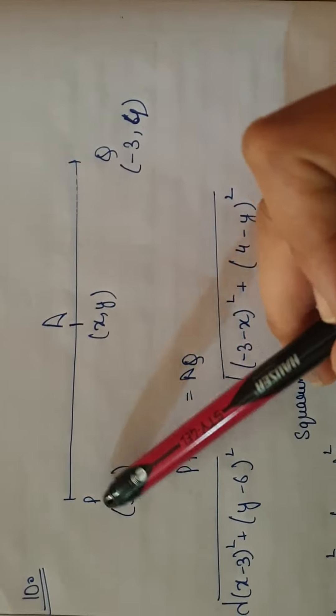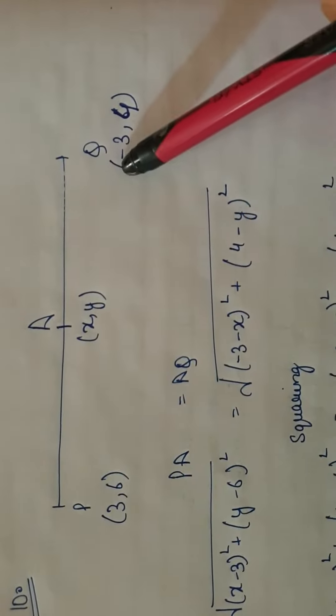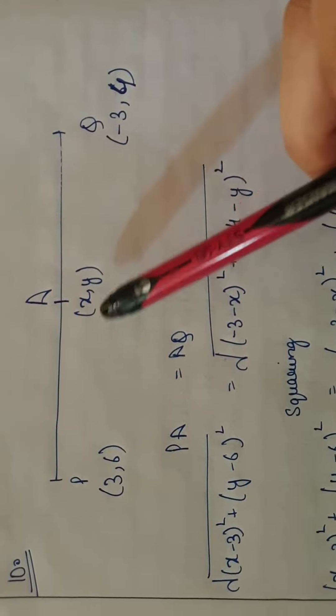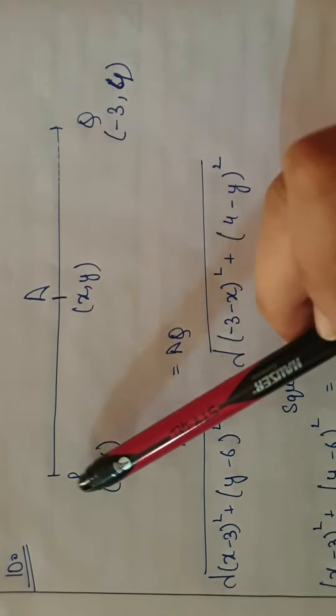The 10th question is 7.1. We have two points: (3, 6) and (-3, 4). Then one point is (x, y) which is equidistant from both.